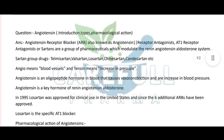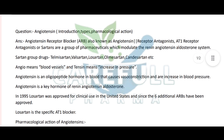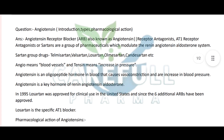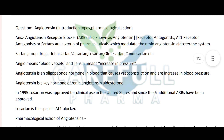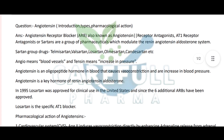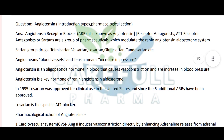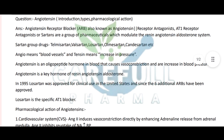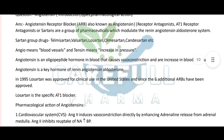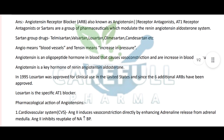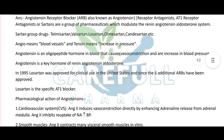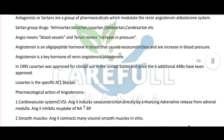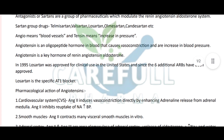Angiotensin Receptor Blockers (ARBs), also known as Angiotensin Receptor Antagonists or AT1 Receptor Antagonists, are a group of pharmaceuticals which modulate the renin-angiotensin-aldosterone system. The Sartan group drugs include telmisartan, valsartan, losartan, olmesartan, candesartan, etc.